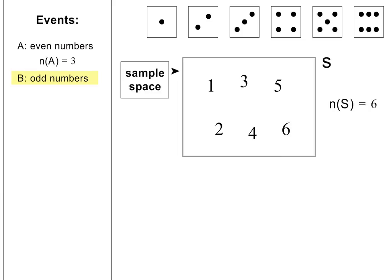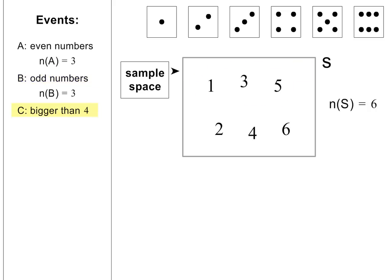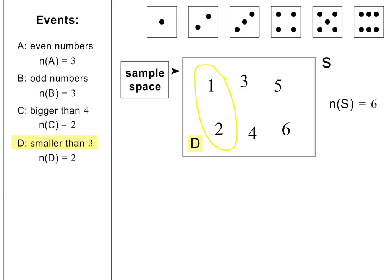Event B is defined to be the odd numbers. 1, 3, and 5 are the outcomes, so N(B) is equal to 3. Event C is defined to be numbers bigger than 4. There are two numbers that are bigger than 4, so N(C) is equal to 2. Event D is defined to be numbers smaller than 3. There are again only two outcomes in this event, so N(D) is also equal to 2.